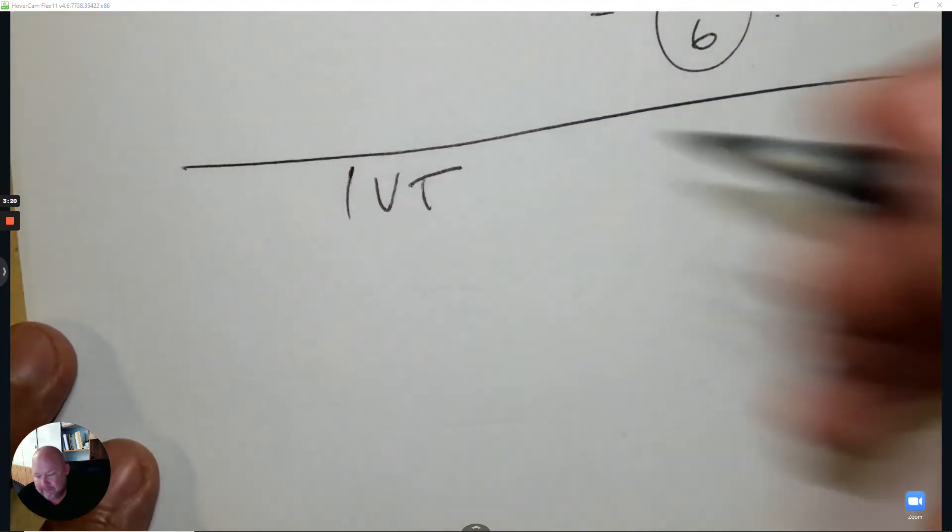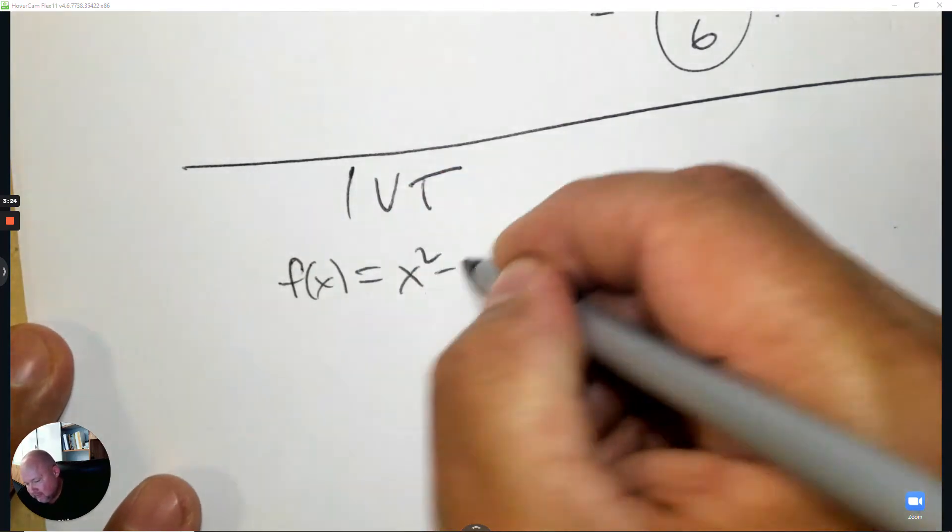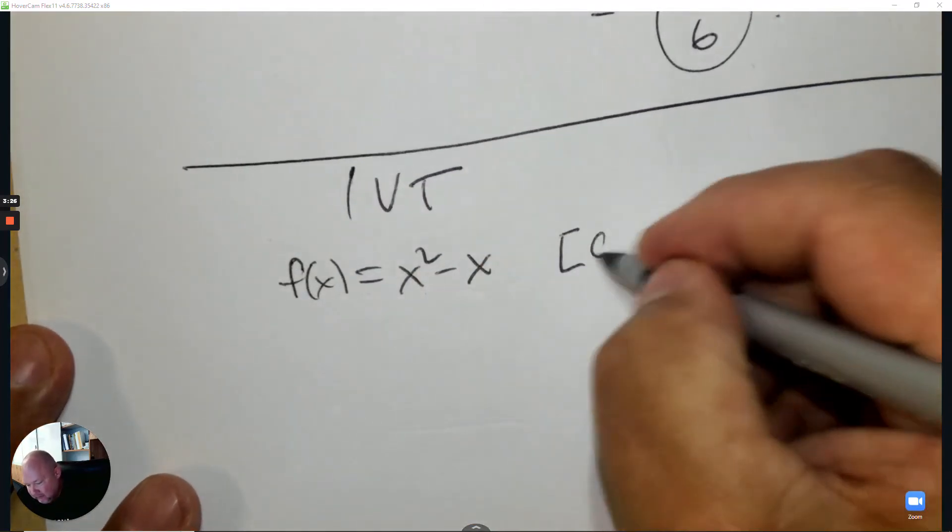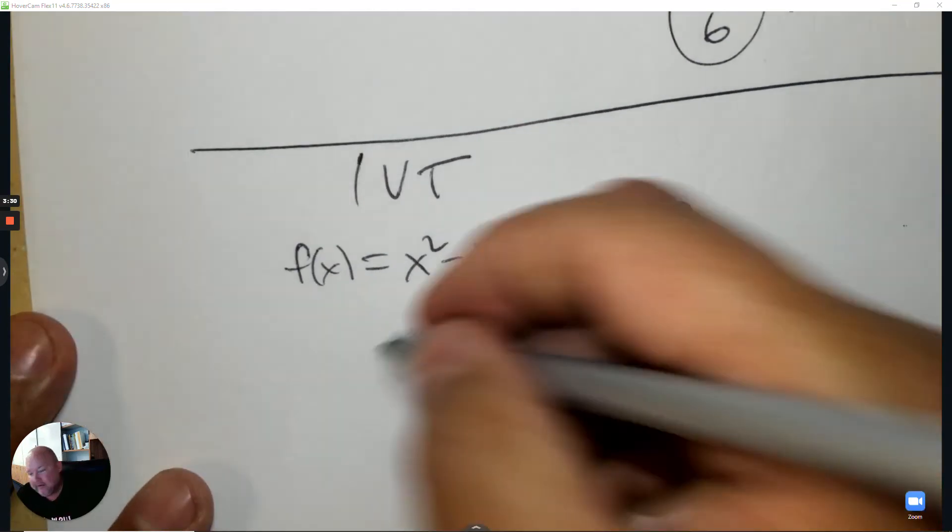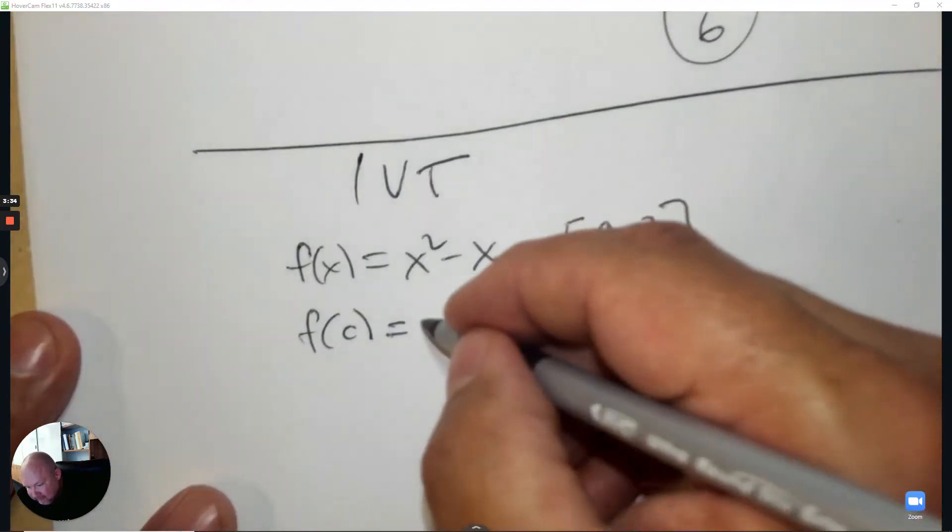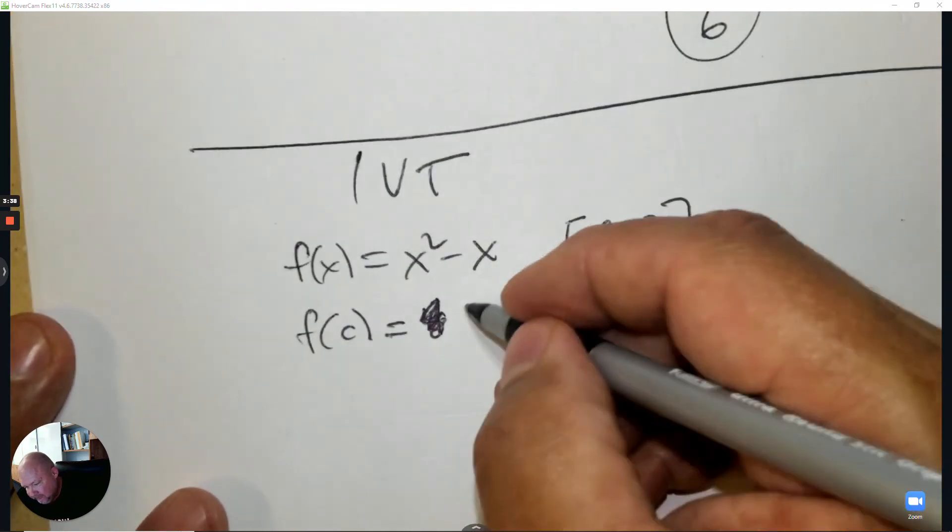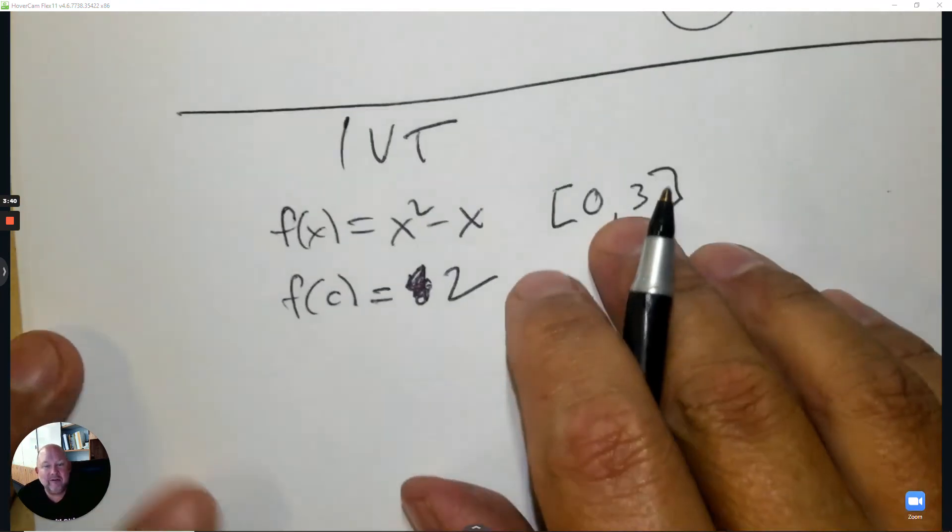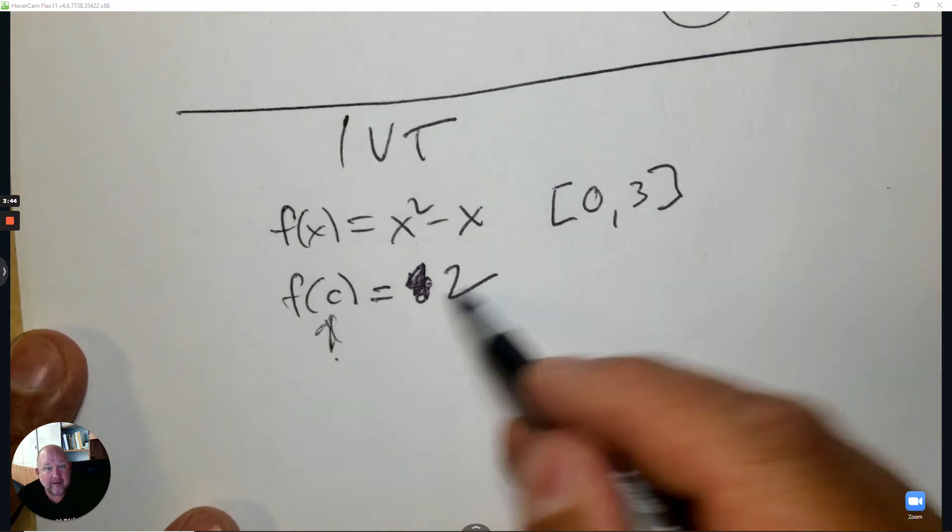For the intermediate value theorem, if I give you a function and an interval, then ask: for some c value, does it exist?